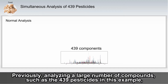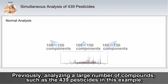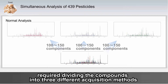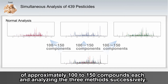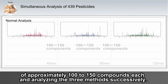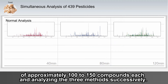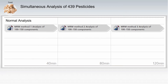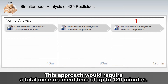Previously, analyzing a large number of compounds, such as the 439 pesticides in this example, required dividing the compounds into three different acquisition methods of approximately 100 to 150 compounds each, and analyzing the three methods successively. This approach would require a total measurement time of up to 120 minutes.